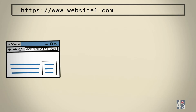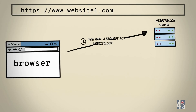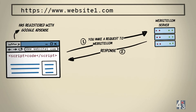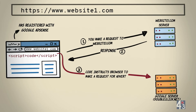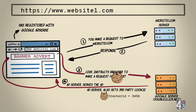Let's assume WebsiteOne.com is a publisher who has registered with Google's AdSense program. The publisher places the code snippet or script on their website to display ads. When you visit WebsiteOne.com, your browser makes a request to the server and gets back a response, rendering the website on your browser. The code snippet embedded in the website instructs your browser to request an ad from Google servers like DoubleClick.net. Google server DoubleClick.net serves the ad on the website and also sets a third-party tracker cookie for you.